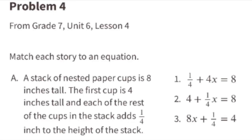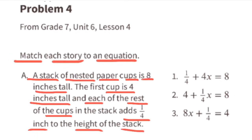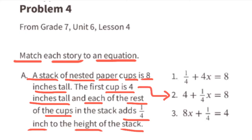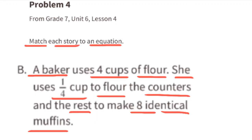Problem number four from 7th grade Unit 6 Lesson 4: match each story to an equation. Story a — a stack of nested paper cups is 8 inches tall. The first cup is 4 inches tall, and each of the rest of the cups adds one fourth inch to the height. The total of 8 inches equals the height of the first cup, 4 inches, plus one fourth of an inch times the number of remaining cups. Story a matches equation two: 4 plus one fourth x equals 8.